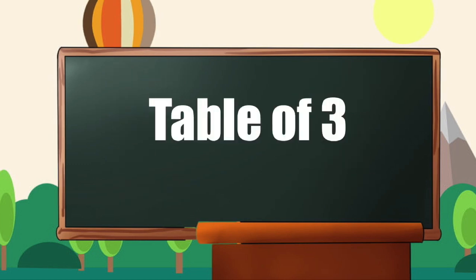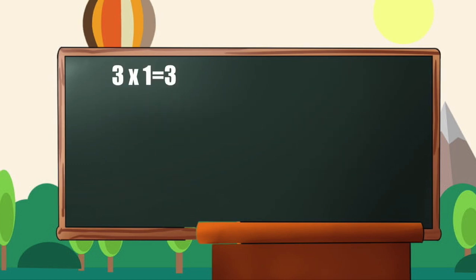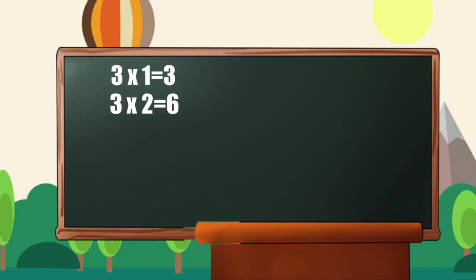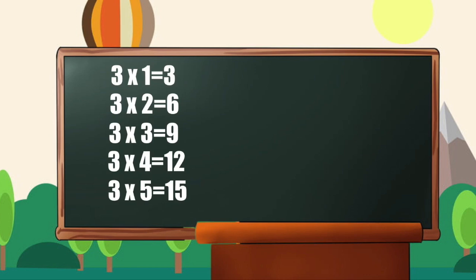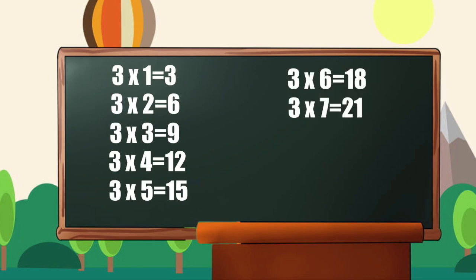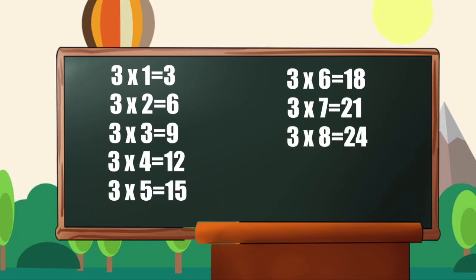Table of 3: 3 1s are 3, 3 2s are 6, 3 3s are 9, 3 4s are 12, 3 5s are 15, 3 6s are 18, 3 7s are 21, 3 8s are 24, 3 9s are 27.